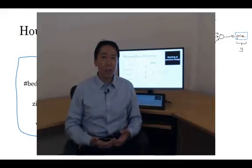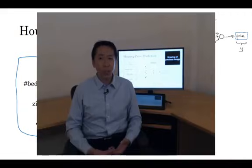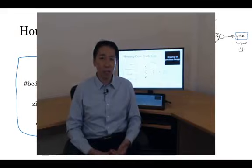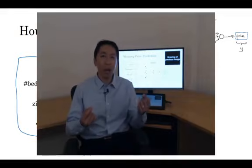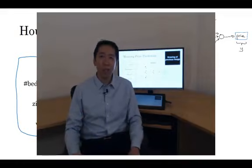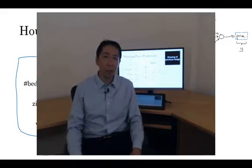So that's a basic neural network. It turns out that as you build out your own neural networks, you'll probably find them to be most useful, most powerful in supervised learning settings, meaning that you're trying to take an input X and map it to some output Y, like we just saw in the housing price prediction example. In the next video, let's go over some more examples of supervised learning, and some examples of where you might find neural networks to be incredibly helpful for your applications as well.